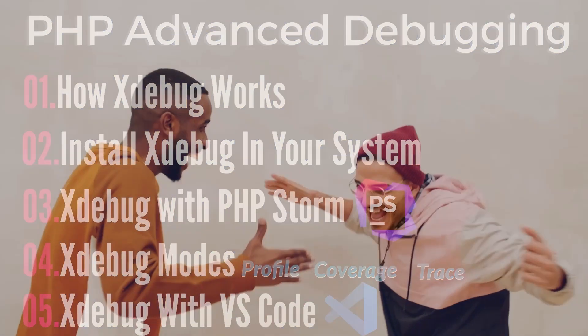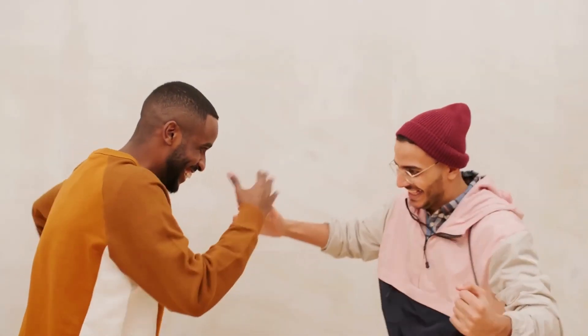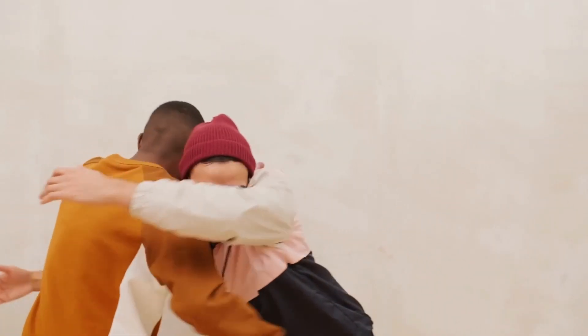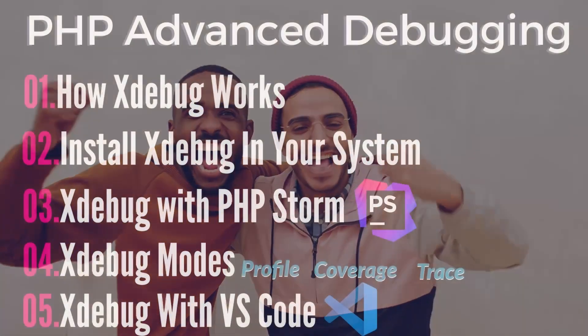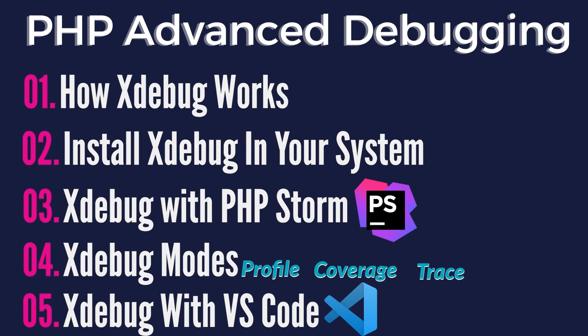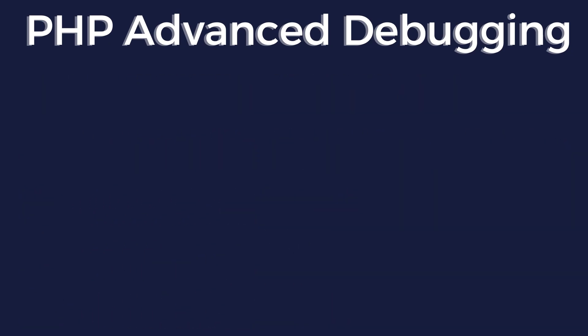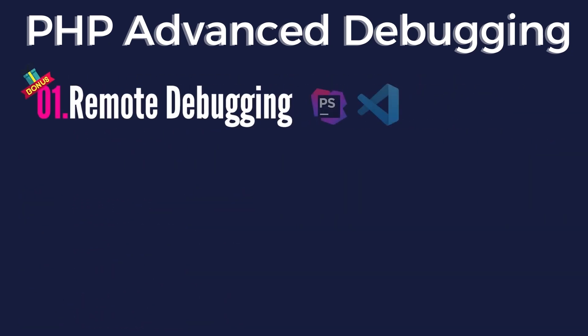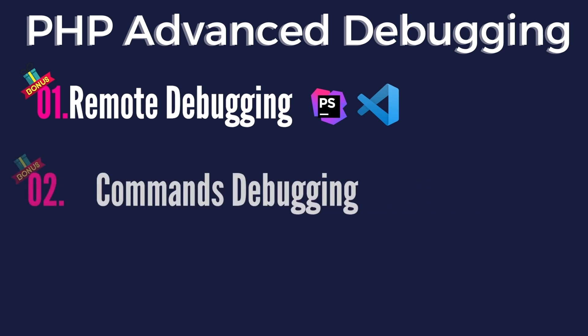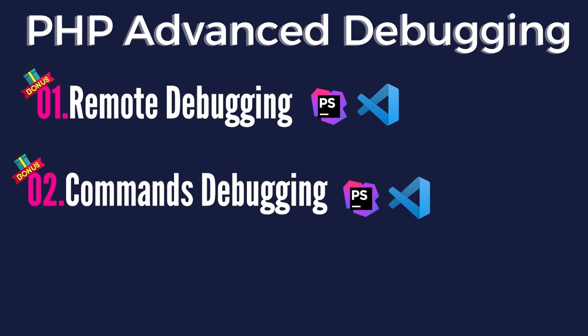By the end of this part, you will be highly qualified for solving bugs and understanding a project deeply. The last and final part will be open and optional, specified for topics such as how to do remote debugging on another server using SSH, how to debug executed CLI commands like Symfony commands, or how to debug and call APIs using Postman.